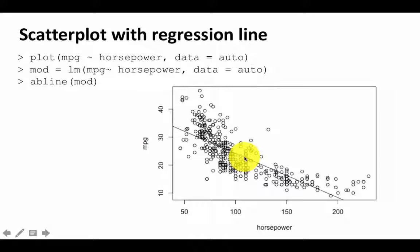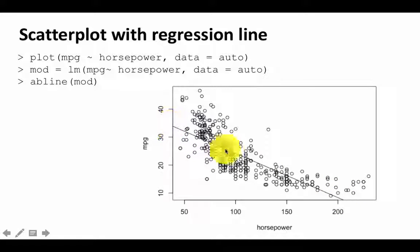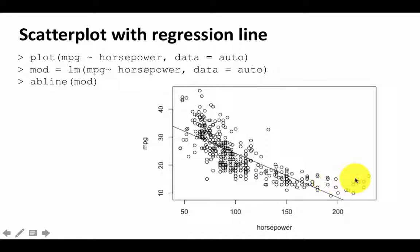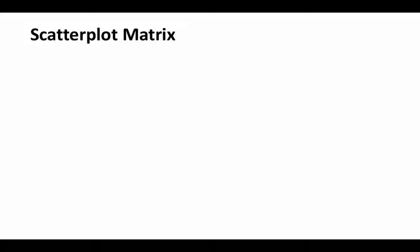If you do that, you will get the scatter plot but you will also get the regression line. So the linear regression line looks like this, but clearly the trend is not linear in this case — it's very clearly quadratic. So that's how you do a scatter plot along with a regression line.